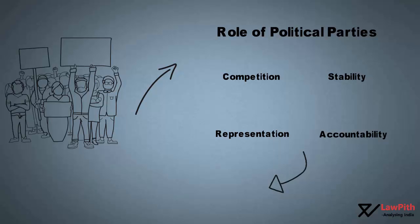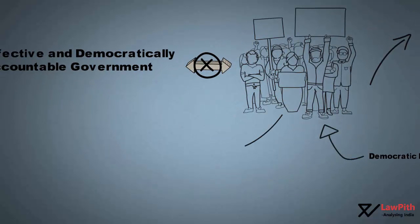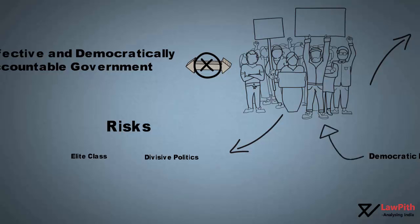A democratic electoral system requires these functions to be fulfilled, and political parties are well placed to fulfil them. However, political parties also pose risks to democracy. They serve as vehicles for small allies and their interests, and they can lead to divisive politics. Lack of majority for one party can lead to hung assemblies.